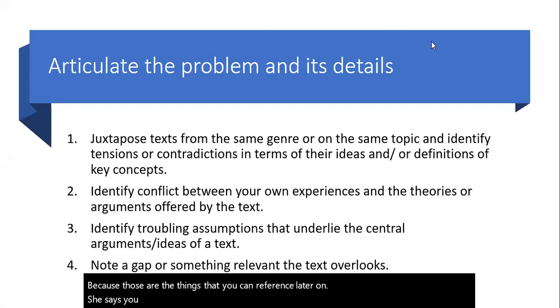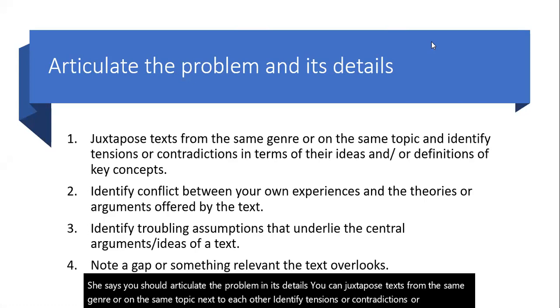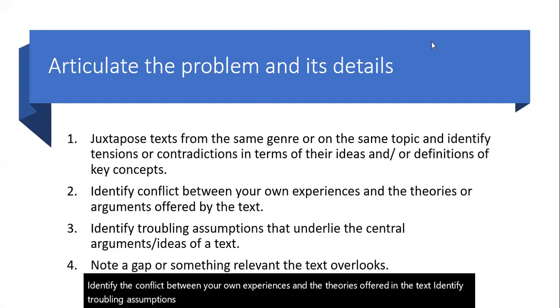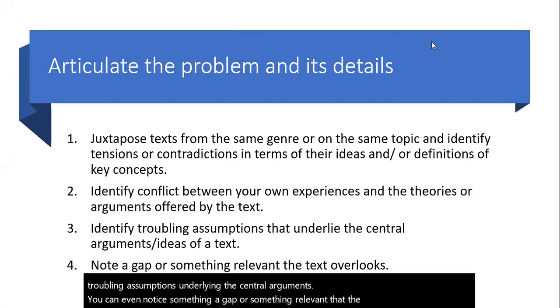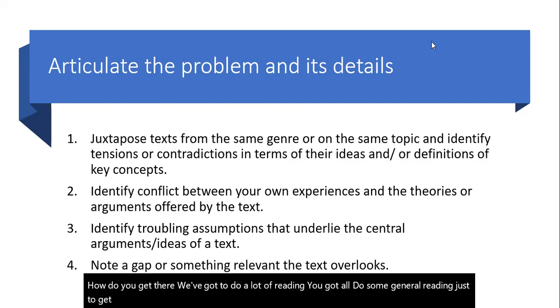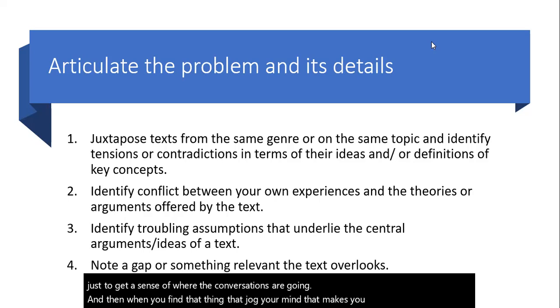She says you should articulate the problem in its details. You can juxtapose texts from the same genre or on the same topic next to each other. Identify tensions or contradictions or definitions. Identify the conflict between your own experiences and the theories offered in the text. Identify troubling assumptions underlying the central arguments. You can even notice something, a gap or something relevant that the text doesn't talk about. How do you get there? Well, you've got to do a lot of reading. You've got to do some general reading just to get a sense of where the conversations are going. And then when you find that thing that jogs your mind, that makes you concerned, that's where you begin digging into the research.